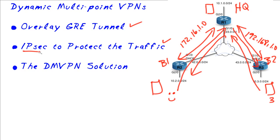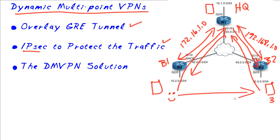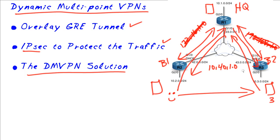But what about this Dynamic Multipoint VPN — what's that all about? The problem with the solution we've been looking at is that if a user at branch one wants to access a server at branch two, it seems silly to have to go through the hub for all of that traffic. The solution with Dynamic Multipoint VPNs is that branch office one and branch office two, when they first join the internet and want to build GRE tunnels, instead of joining separate networks, they'll both join the same GRE network of, let's say, 10.40.1.0.